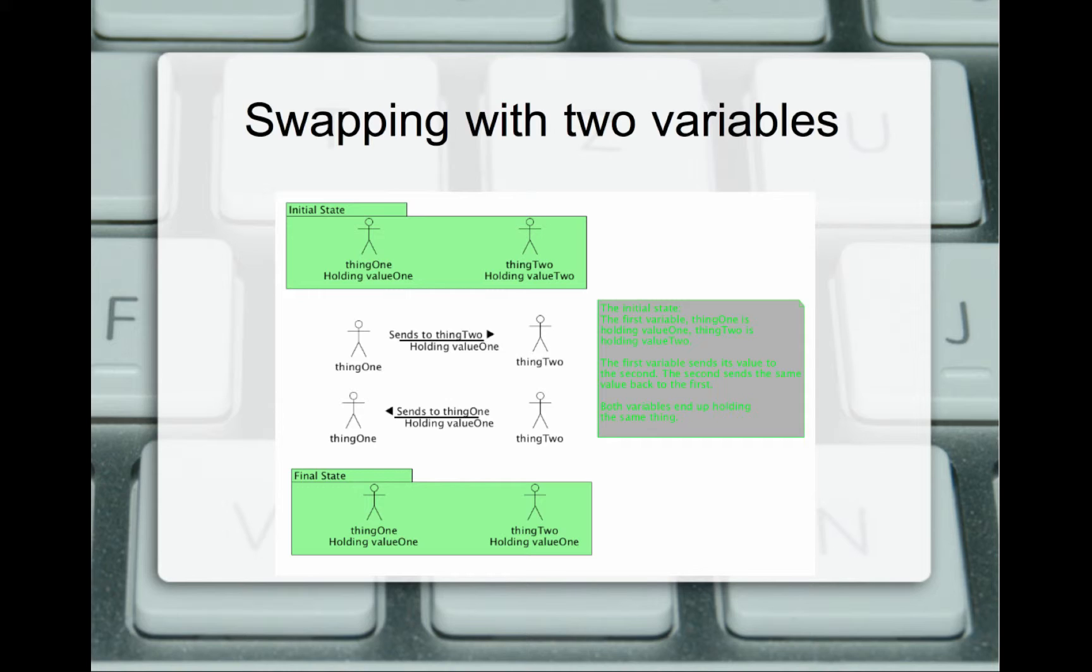Now thing two is also holding value one. So thing two is now going to send value one back to thing one. And so now after our swap with only two variables, we have both thing one and thing two, both holding value one. Total waste of time. We don't have a swap. We actually lost data.